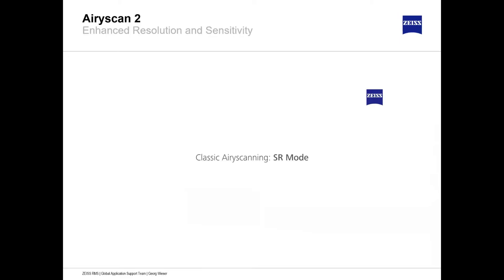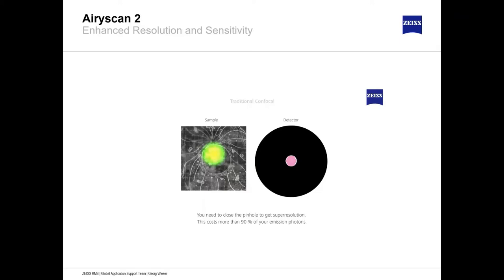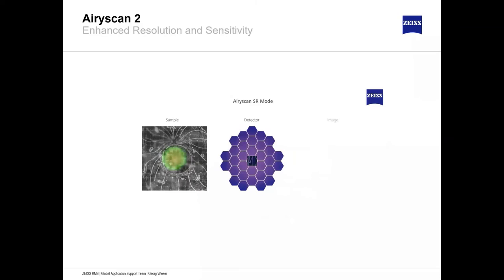This animation shows why Airyscan increases resolution and signal-to-noise ratio. In traditional confocal, a diffraction-limited laser spot scans the sample and you must close the pinhole for super resolution, which costs many photons. With Airyscan 2, all photons of 1.25 Airy units are detected, the spatial information is extracted, and a single super resolution image is calculated — repeated for every pixel, resulting in a complete super resolution image.